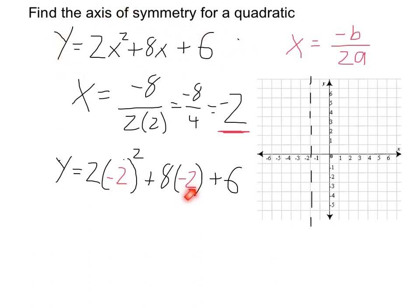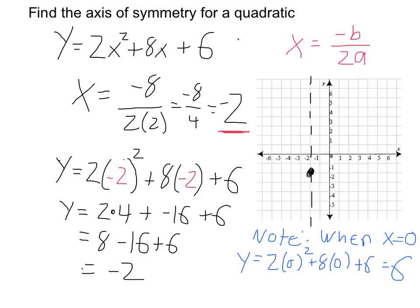Just plug that in here, and when I evaluate all this, I get negative 2, meaning the vertex is going to be at x equals negative 2, y equals negative 2. So I know where my vertex is,